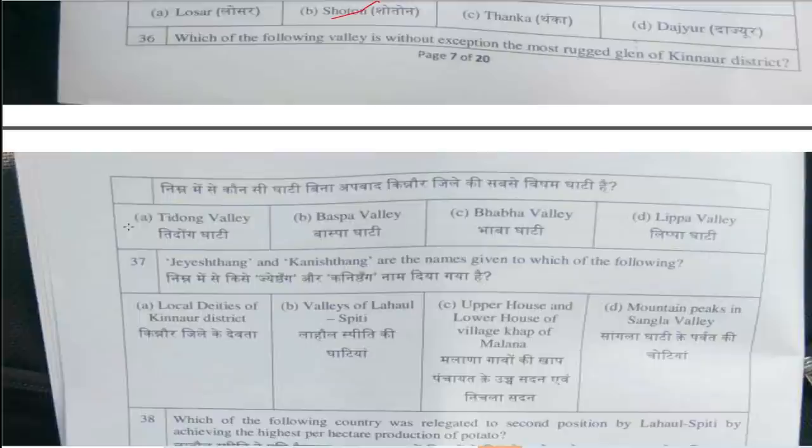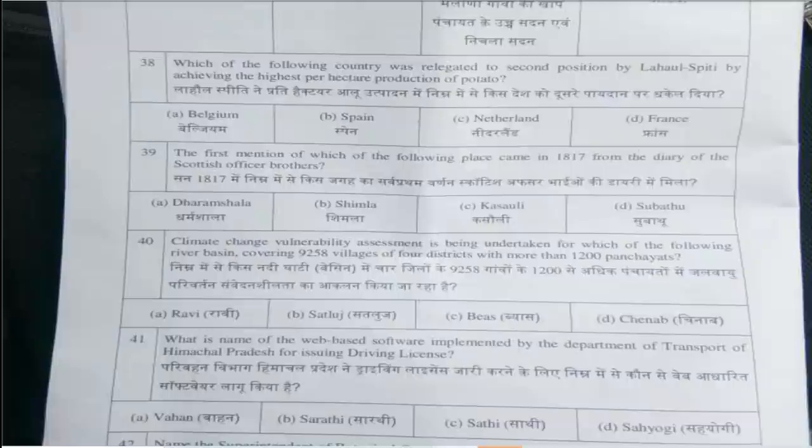Thirty-seventh question is: Jesh Thang and Kanesh Thang are the names given to which of the following? The answer is option C, Upper house and lower house of the village Kharp of Malana. Thirty-eighth question: Which country was relegated to second position by Lahaul Spiti by achieving the highest per hectare production of potato? The answer is option C, Netherlands.